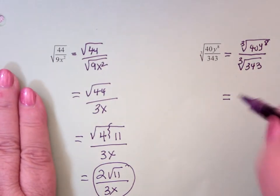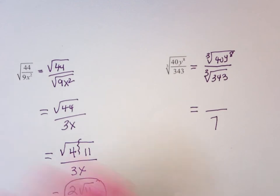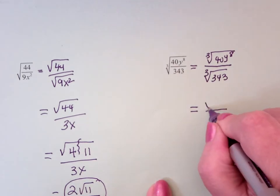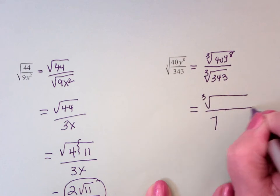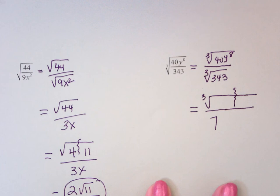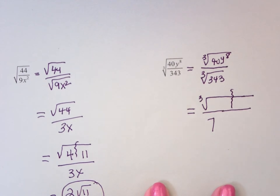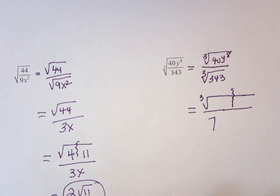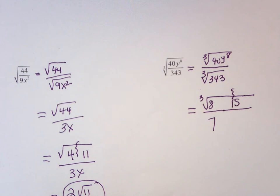So the denominator is 7. Now, the numerator can be broken into pieces. The cube and the uncube. And the cube in 40 is 8 with a leftover of 5.